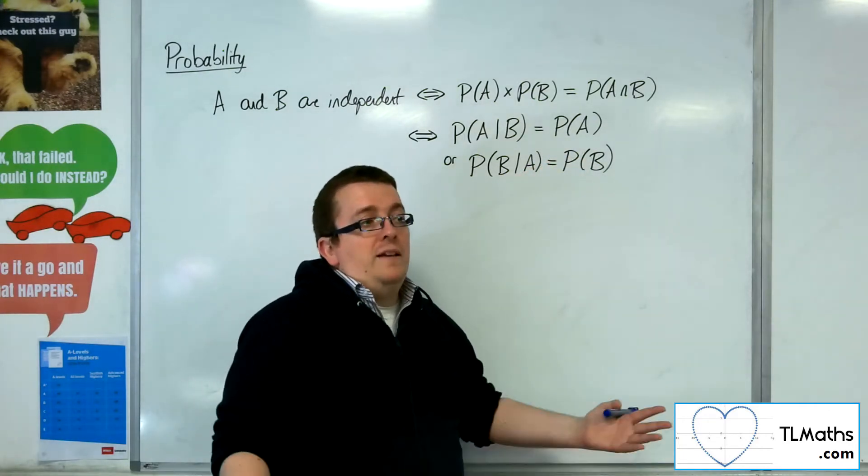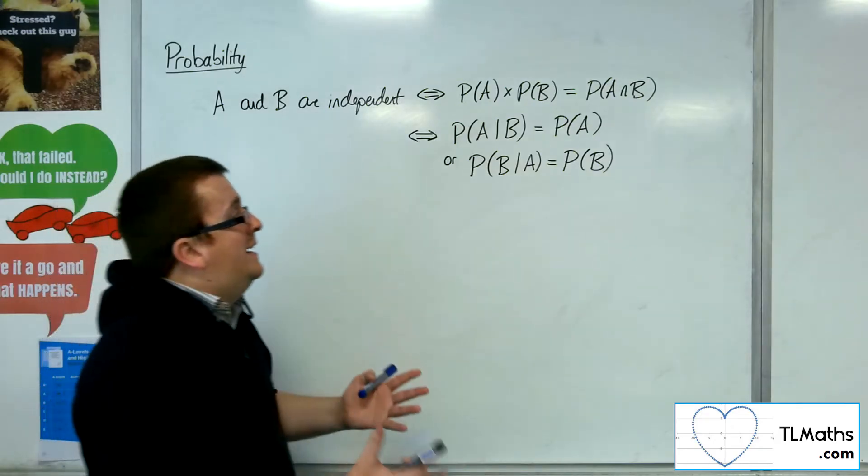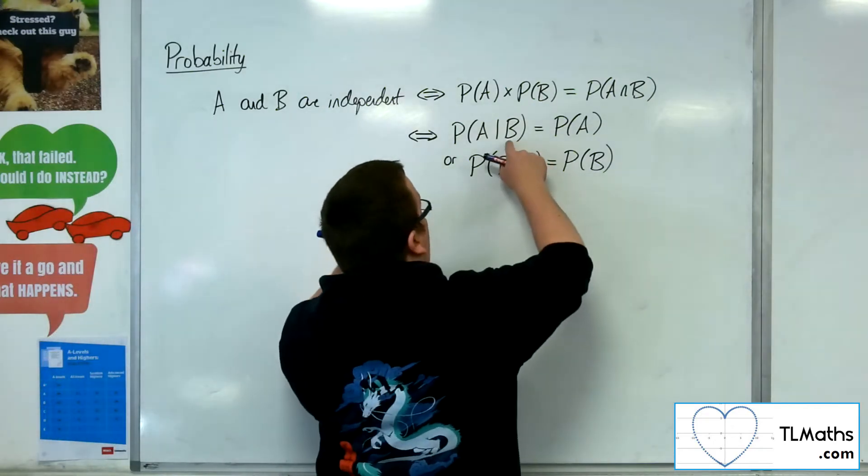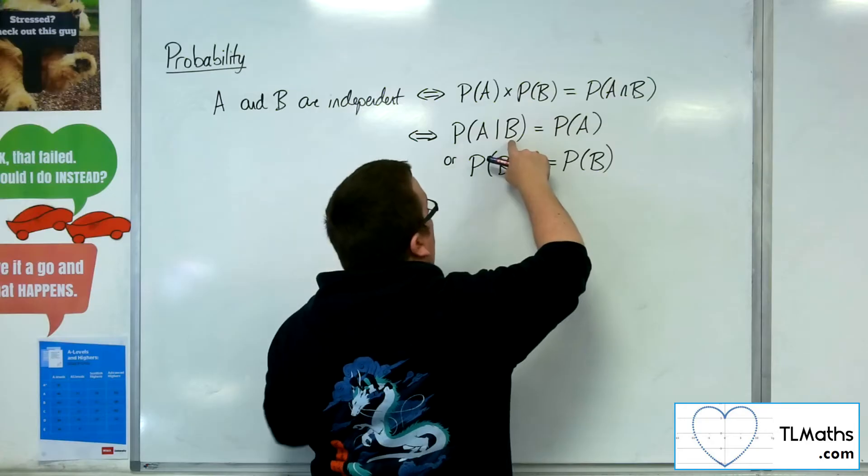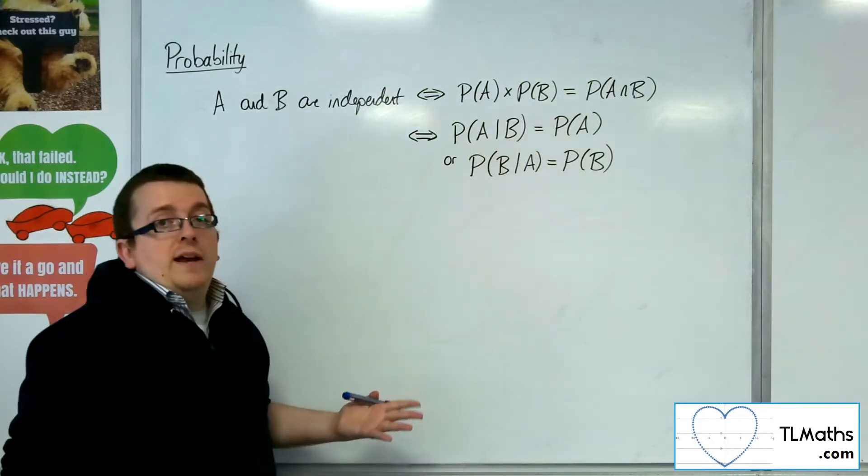Or the fact that it has happened or didn't happen, it doesn't make any difference. So regardless, it doesn't matter if B's happened, the probability of A given B is the same as the probability of A.